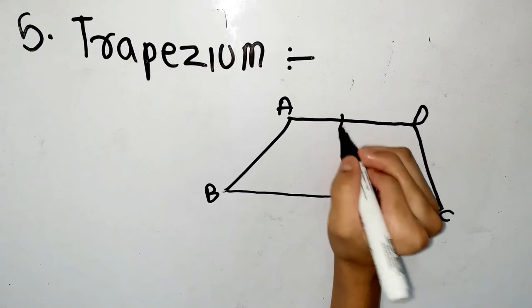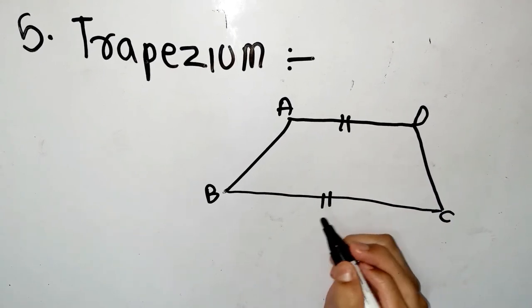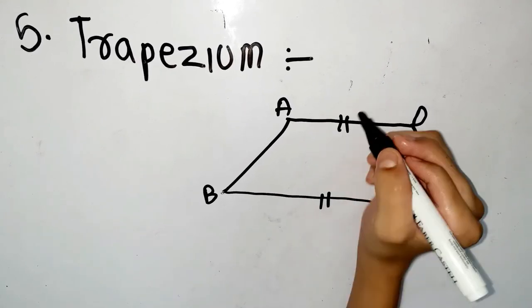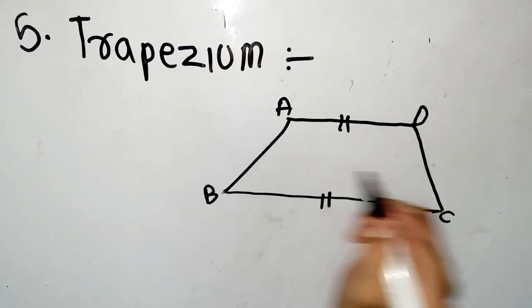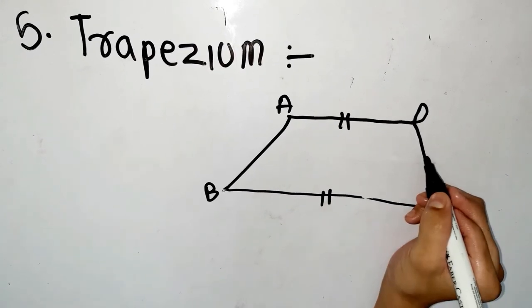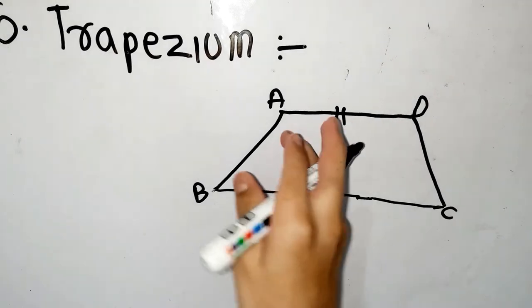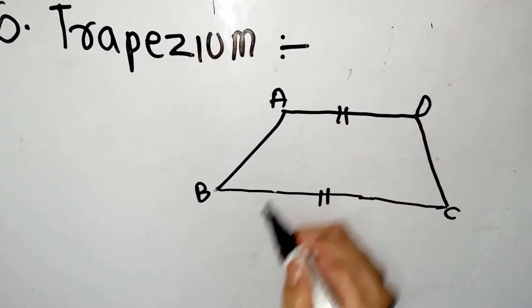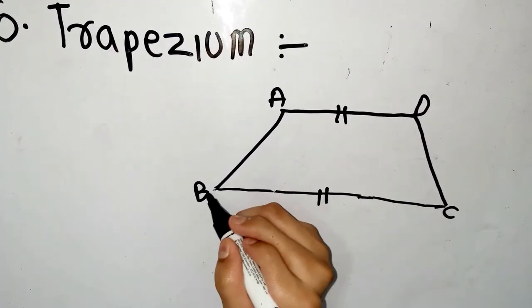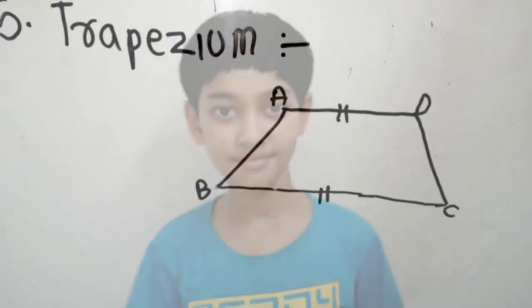This line is parallel to this line, but this line is not parallel to this line. In a trapezium, one pair of opposite sides are equal in length — AB equals DC in length.